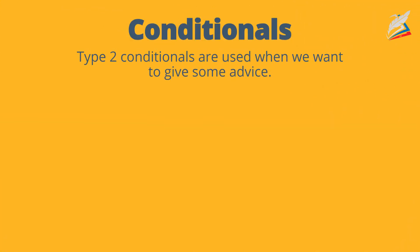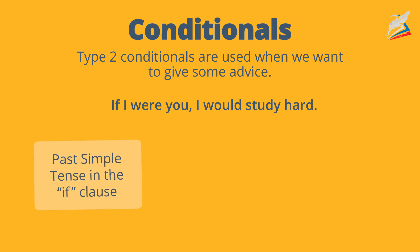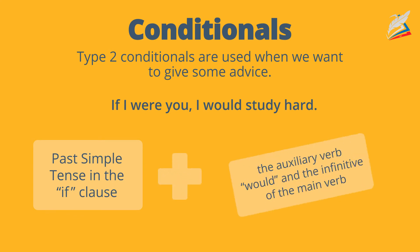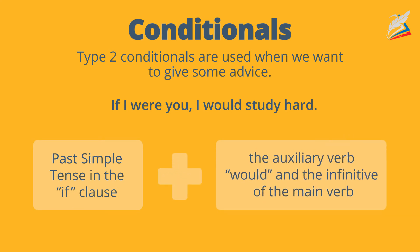Type 2 conditionals are used when we want to give some advice. They are also used when we talk about some unreal present or future situation. For example: if I were you, I would study hard. To form a type 2 conditional sentence, we need to use past simple tense in the if clause and the auxiliary verb 'would' and the infinitive of the main verb in the main clause.